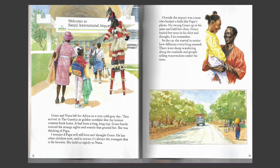Grace and Nana left for Africa on a very cold, gray day. They arrived in the Gambia in golden sunshine like the hottest summer back home. It had been a long, long trip. Grace barely noticed the strange sights and sounds that greeted her — she was thinking of Papa. "I wonder if Papa will still love me," thought Grace. "He has other children now, and in stories, it's always the youngest that is the favorite." She held on tightly to Nana. Outside the airport was a man who looked a little like Papa's photo. He swung Grace up in his arms and held her close. Grace buried her nose in his shirt and thought, "I do remember."